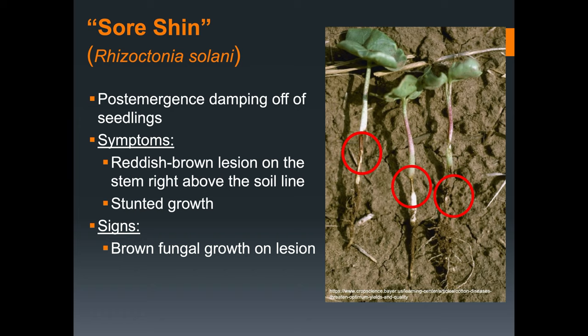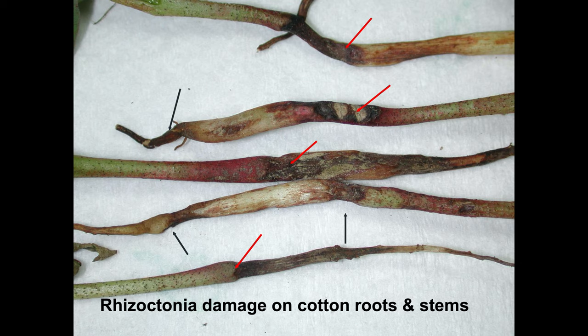When looking at sore shin, it is also common to observe reddish-brown lesions on the stem right above the soil line. Those lesions will coalesce, girdling the seedling and causing it to fall over. You can also see in the field with a hand lens brown fungal growth on the stem.